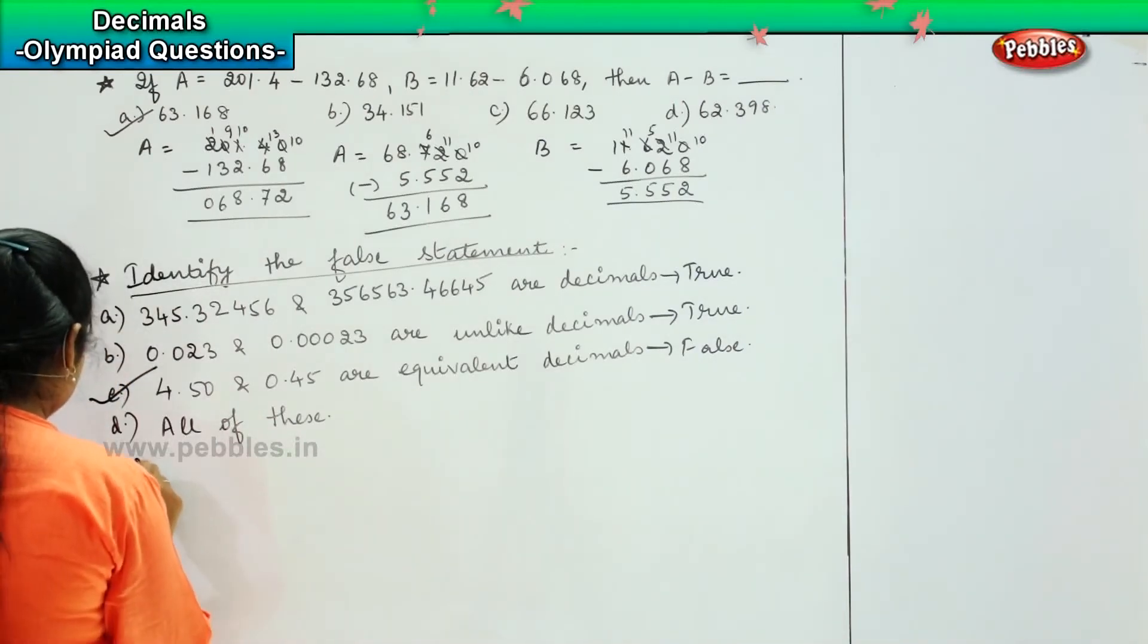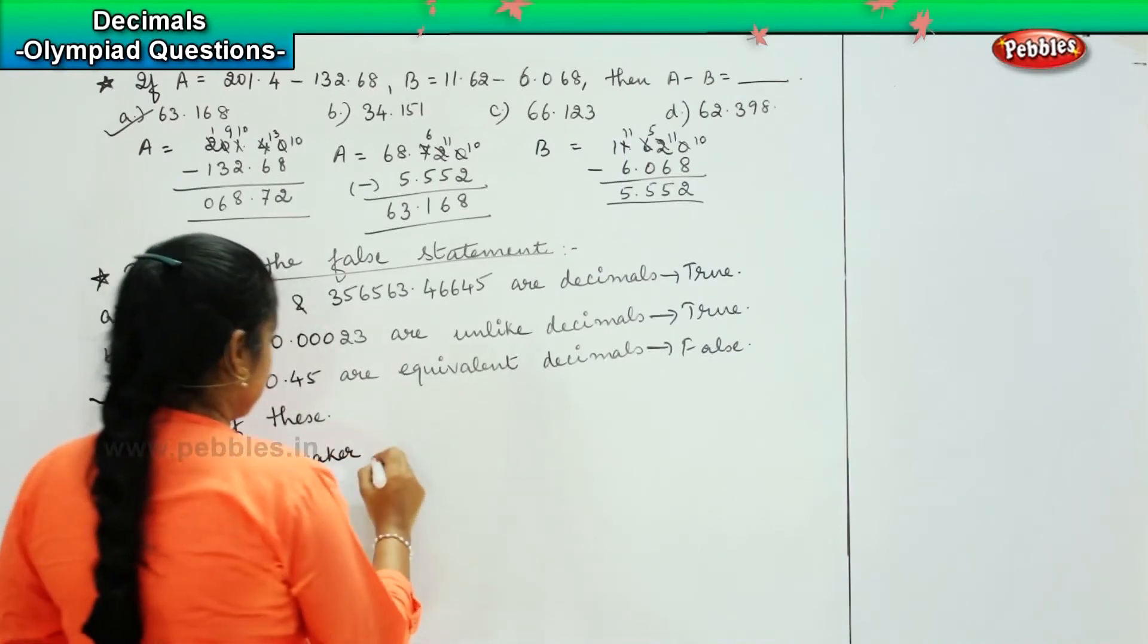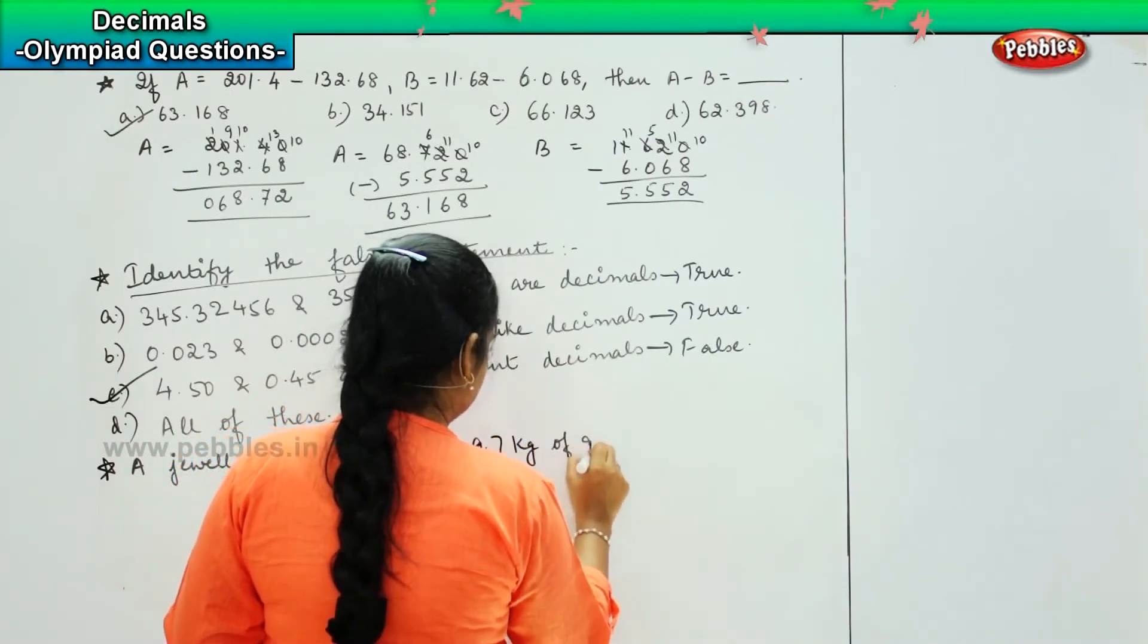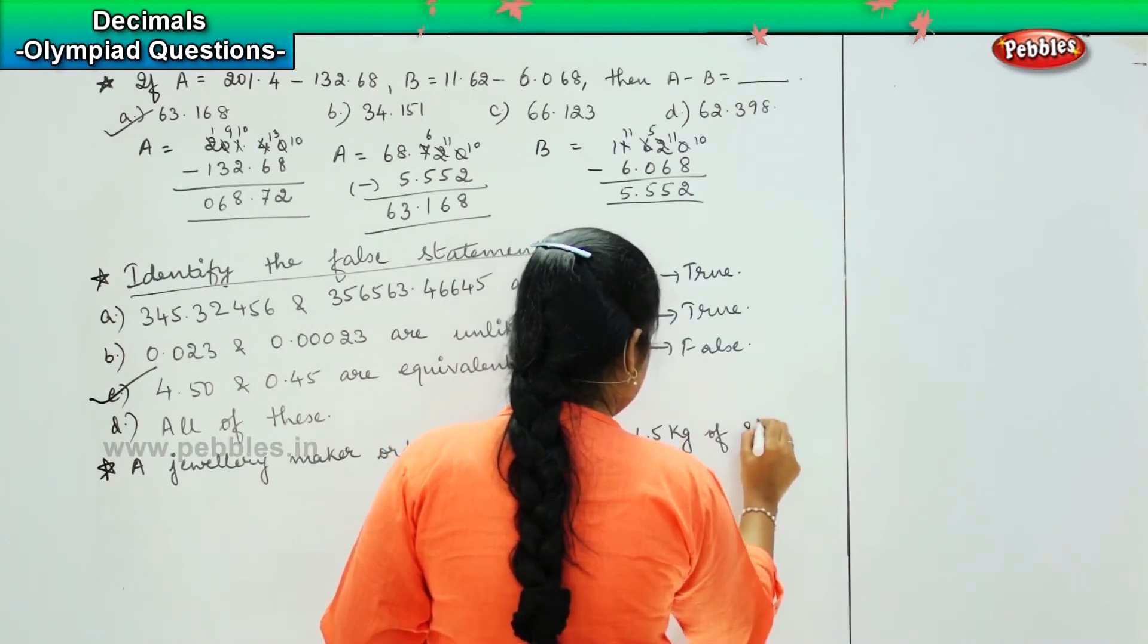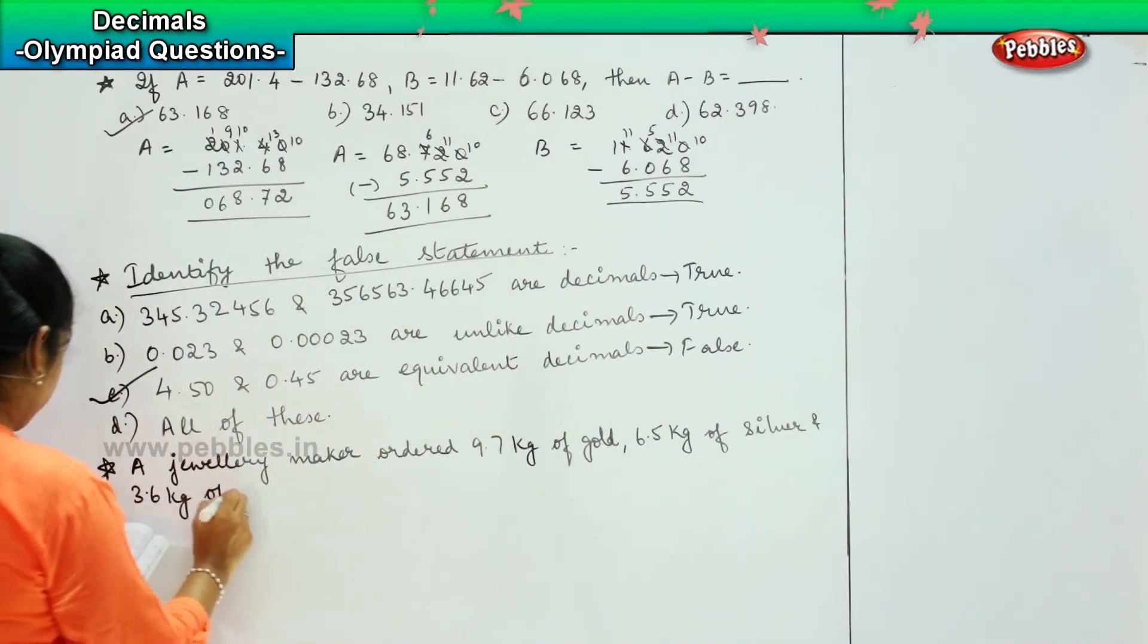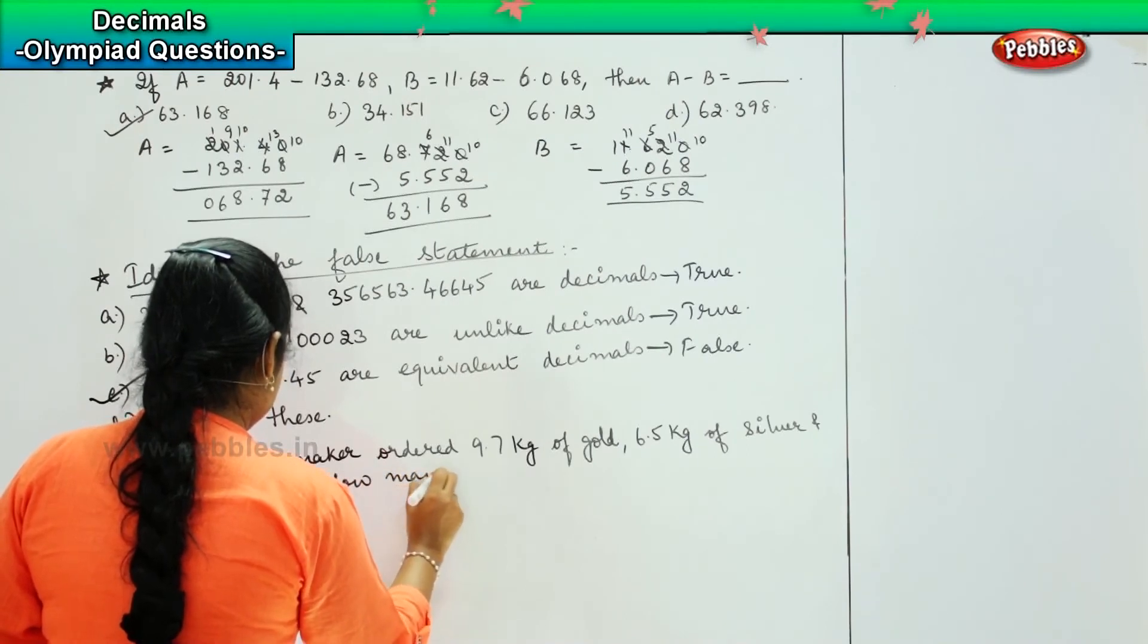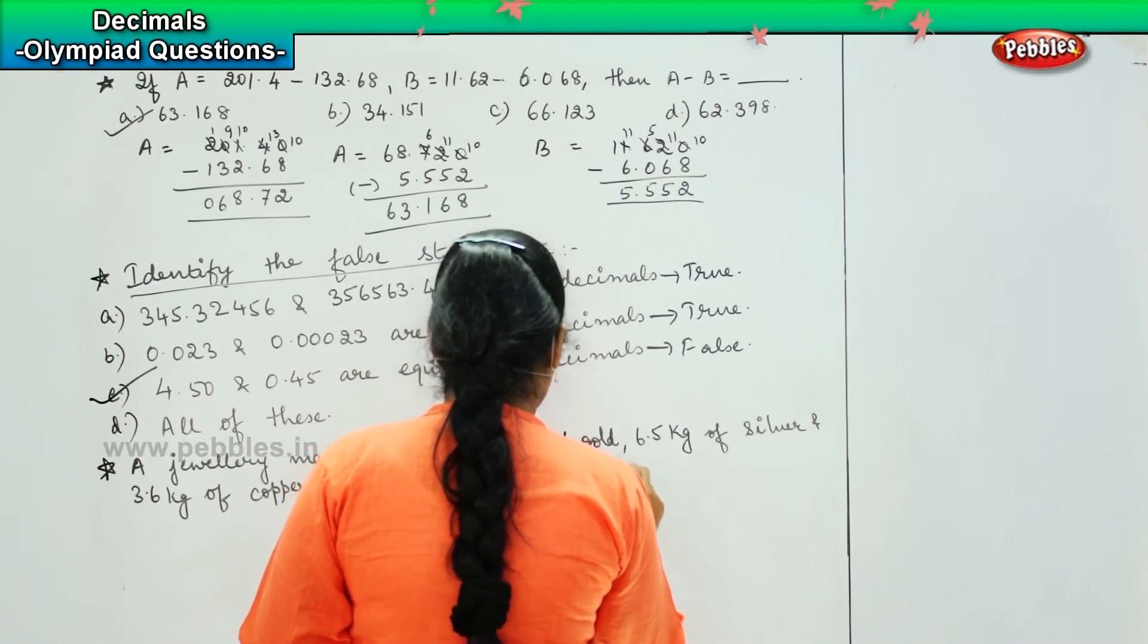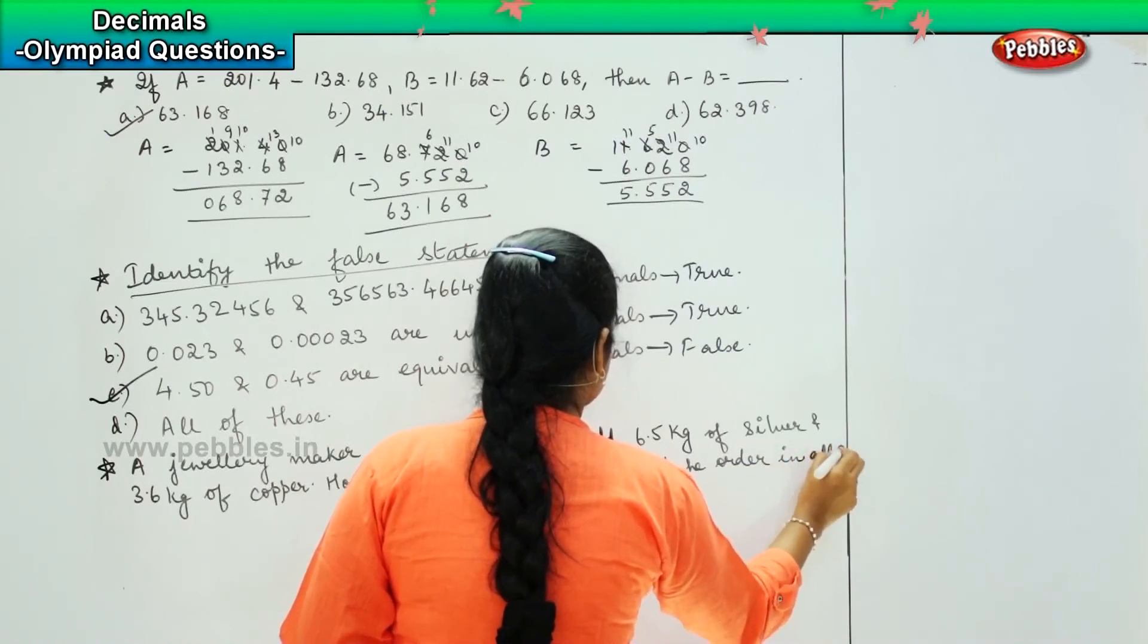A jewelry maker ordered 9.7 kilogram of gold, 6.5 kilogram of silver and 3.6 kg of copper. How many kgs of metal did he order in all?